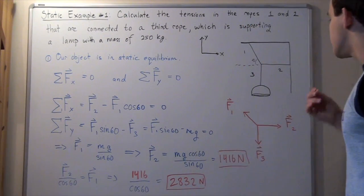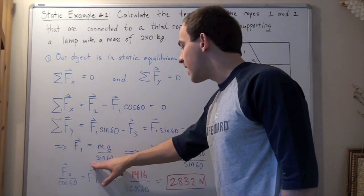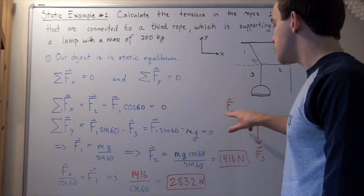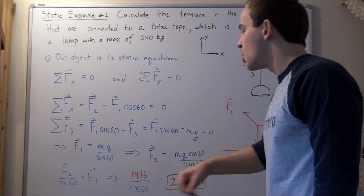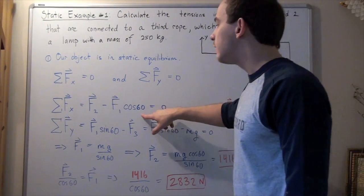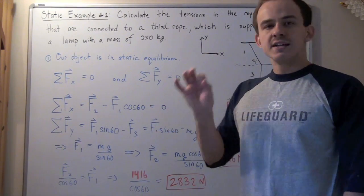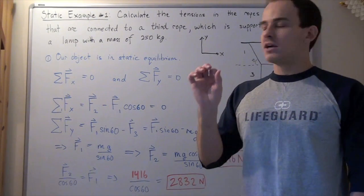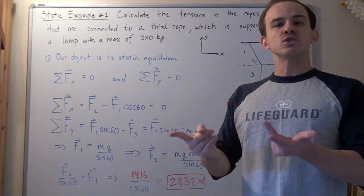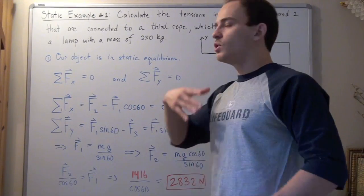So the tension in rope two is 2,832 newtons. Note that since we knew m, g, and sine 60, we could have directly solved for F one using F one equals m times g divided by sine 60, without the intermediate steps. There are many different ways to solve this problem. The important part is recognizing that if a system is in static equilibrium, it has no velocity or acceleration in any direction, and all net forces sum to zero. We simply use these equations and Newton's Laws to solve for our tensions.